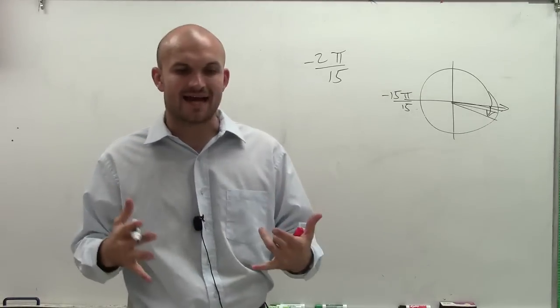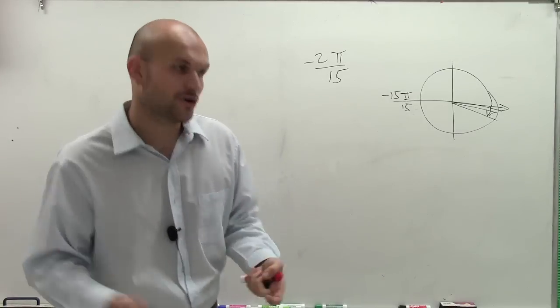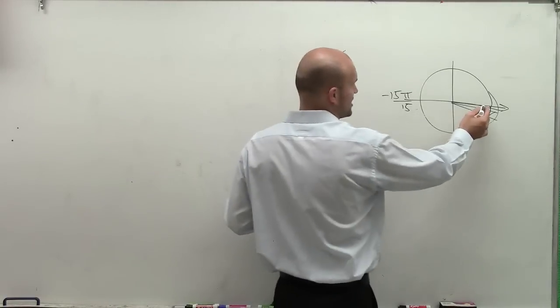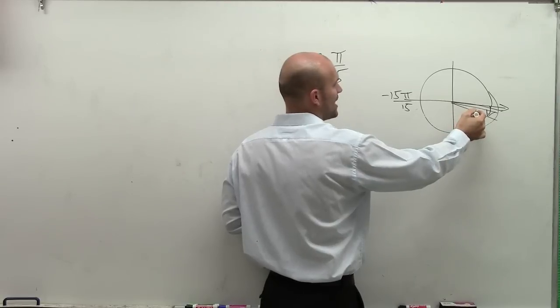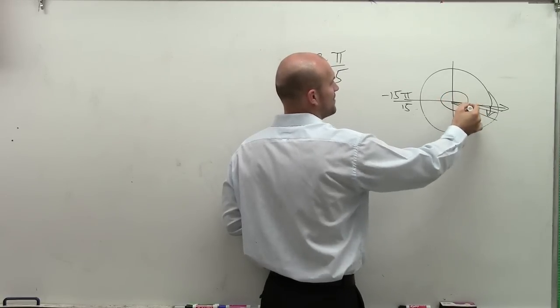Now remember, coterminal angles have exactly the same initial and terminal side. So if I started here and ended here, but let's say instead of ending here, I actually go around a whole more distance of how much more?